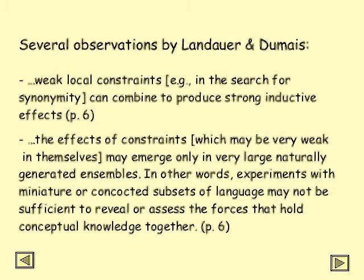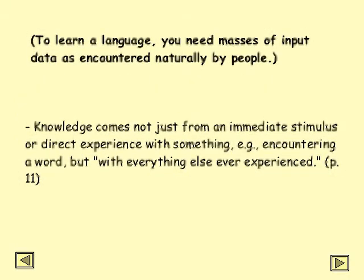Landauer and Dumais offer several observations. First, weak local constraints — for example, the search for synonymity — can combine to produce strong inductive effects. The effects of constraints that are very weak in themselves may emerge only in very large naturally generated ensembles. In other words, experiments with miniature or concocted subsets of language may not be sufficient to reveal the forces that hold conceptual knowledge together. In other words, to learn a language you need masses of input data as encountered naturally by people. Also, knowledge comes not just from an immediate stimulus or a direct experience — for example, encountering a word in a text — but from everything else you've ever experienced.